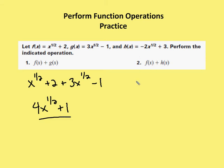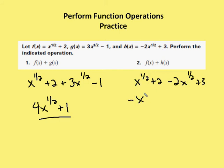In the second, I have f of x plus h of x. f of x is x to the 1 half plus 2, and h of x is equal to negative 2x to the 1 half plus 3. Remember, if I'm adding the functions together, their sign remains the same — I don't need to worry about distributing the negative sign, so I just write it straight out. Combining like terms: x to the 1 half minus 2x to the 1 half gives me negative x to the 1 half, and 2 plus 3 gives me plus 5. So my result is negative x to the 1 half plus 5.